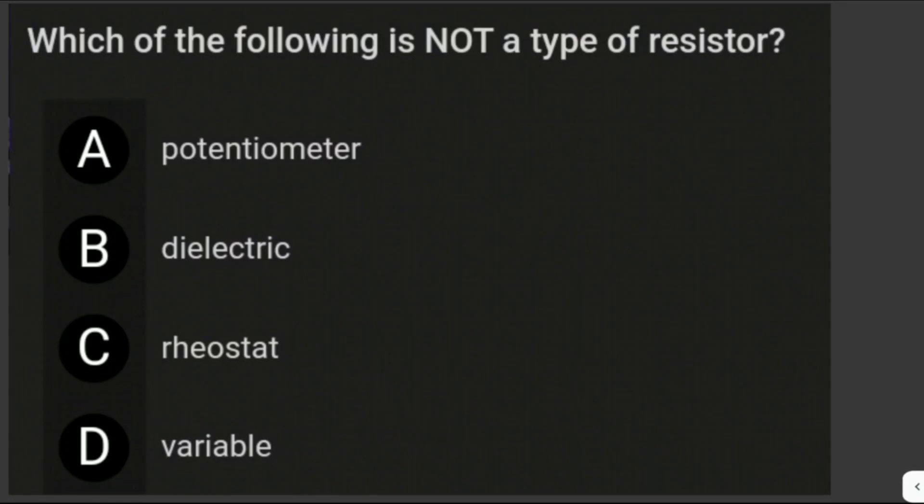Which of the following is not a type of resistor? In our choices, we have potentiometer, dielectric, rheostat, and variable. Potentiometer is a three-terminal resistor with a sliding contact. Therefore, this is a type of resistor. Dielectric is an insulator, so it's not a resistor. Rheostat is a two-terminal variable resistor. A variable resistor is any resistor that allows you to change the amount of resistance. Therefore, the answer is letter B, dielectric.